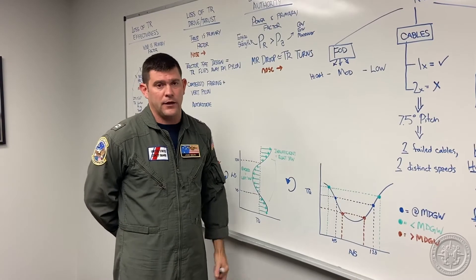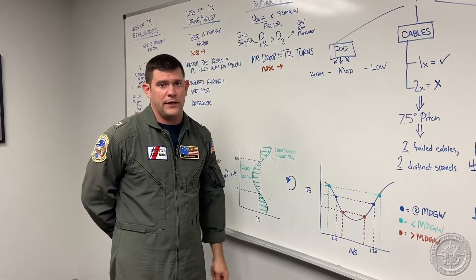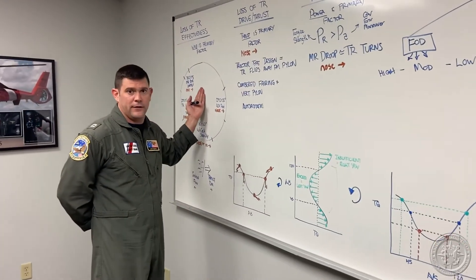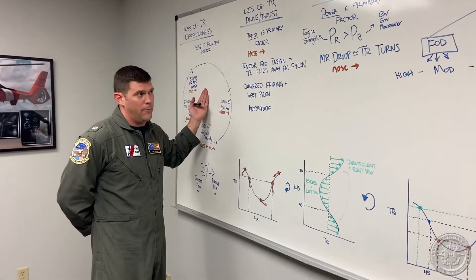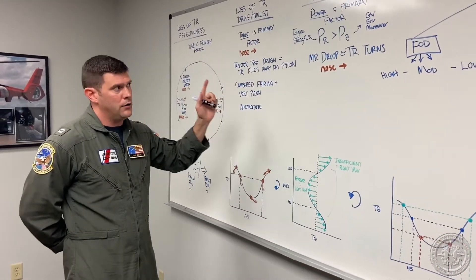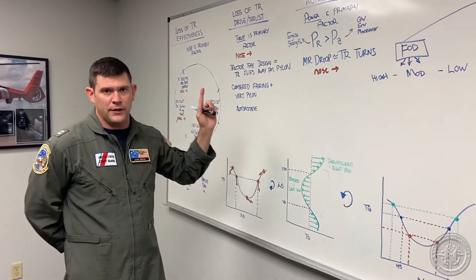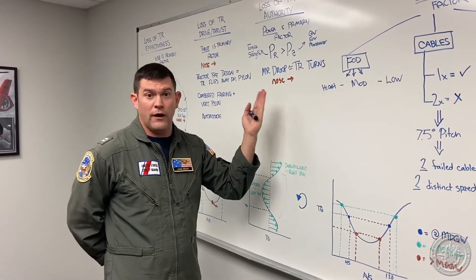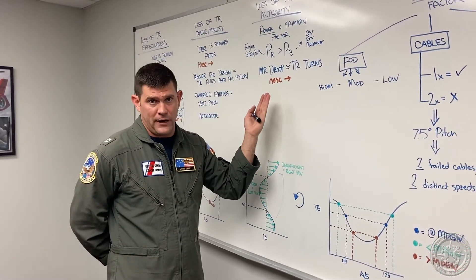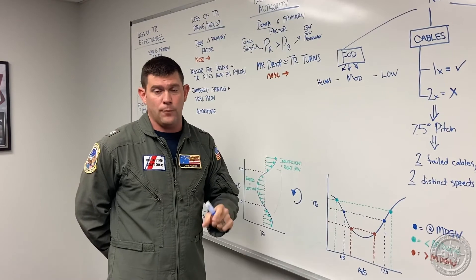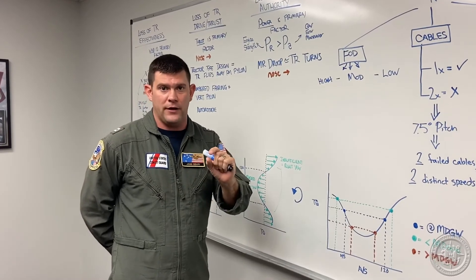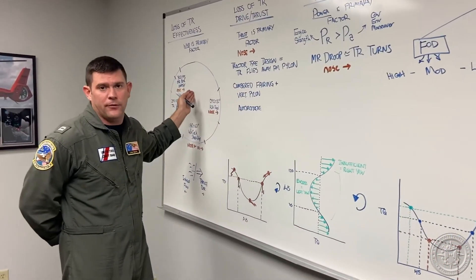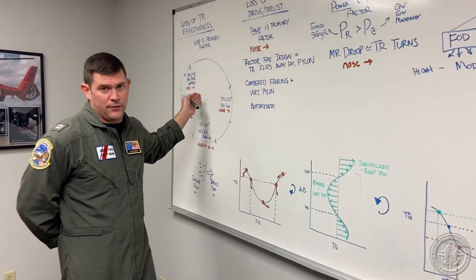It should be noted that loss of tail rotor authority is oftentimes confused with loss of tail rotor effectiveness, as we talked about in the first video. These two are not completely separate. If you are in a position where power required roughly equals power available — in other words, your power margin is very narrow — the H-60 helicopter is significantly more susceptible to loss of tail rotor effectiveness.